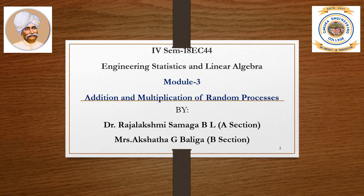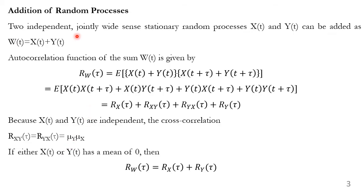Let us begin with addition and multiplication of random processes. Let us consider two independent jointly wide-sense stationary random processes x(t) and y(t). Let us define w(t) which is the sum of these two random processes x(t) and y(t).